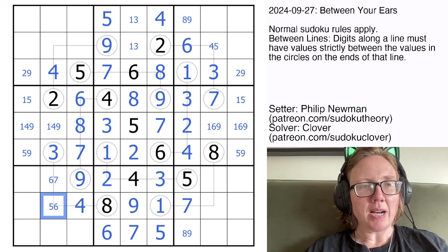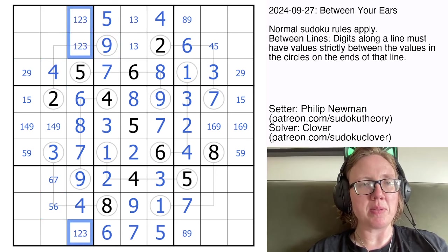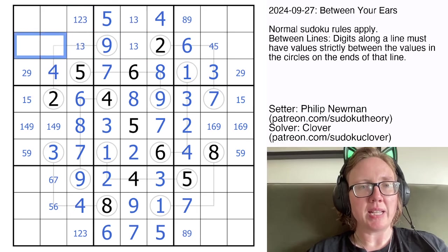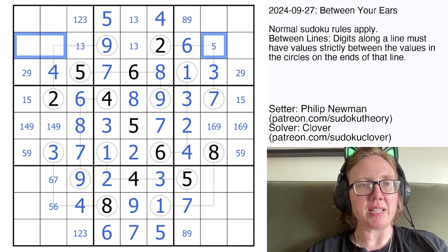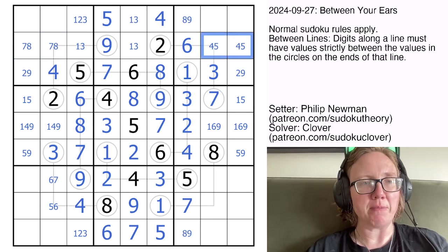Now, up here, finishing this column, I think, is the next best place to look. So those will be 1, 2, and 3. So this is now a 1, 3 pair. And these are going to be 4, 5, 7, and 8. Those can't be 4 or 5. This is going to have to be a 4, 5 pair.